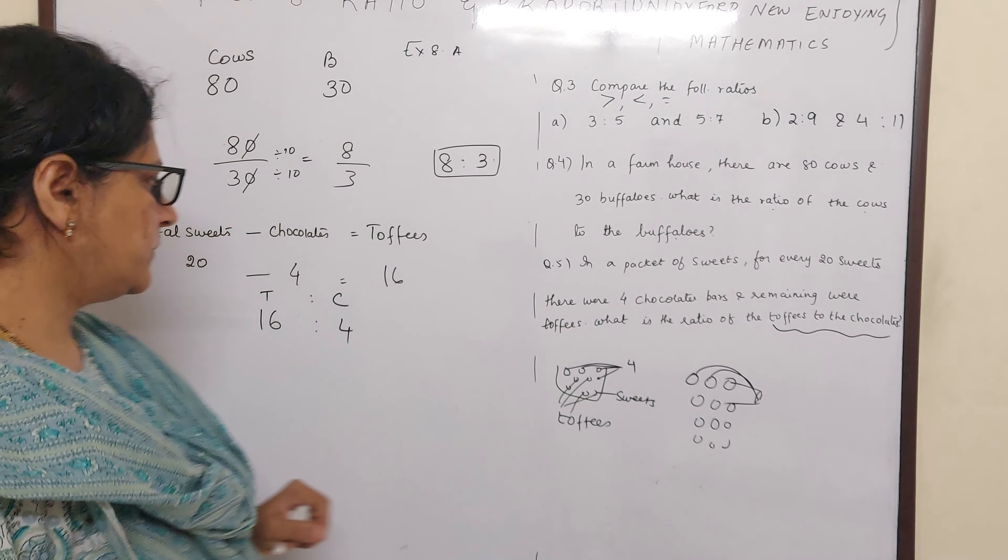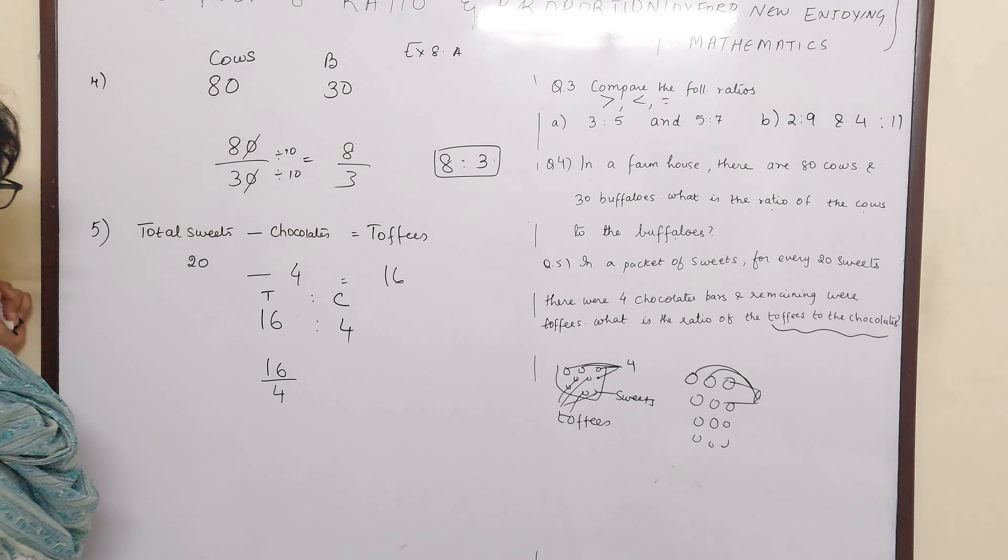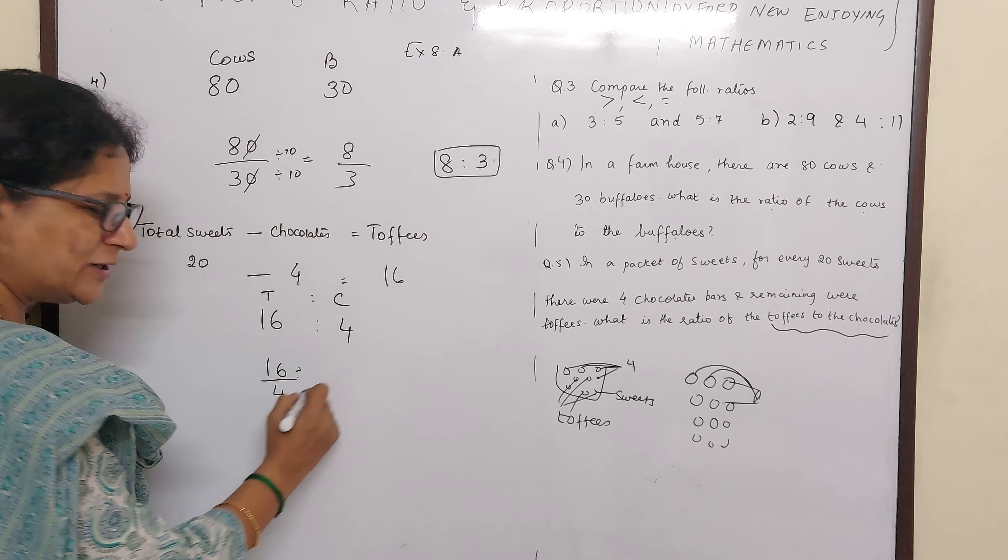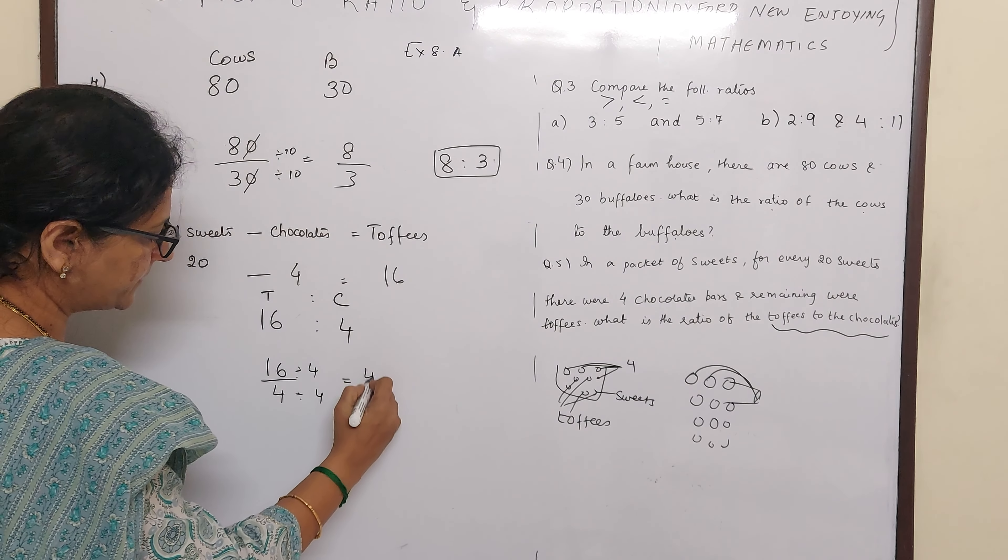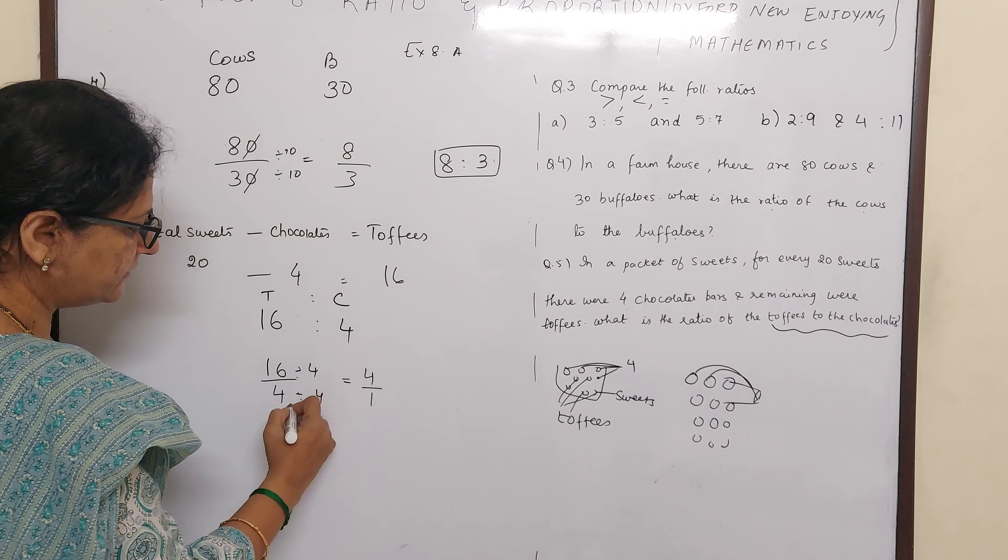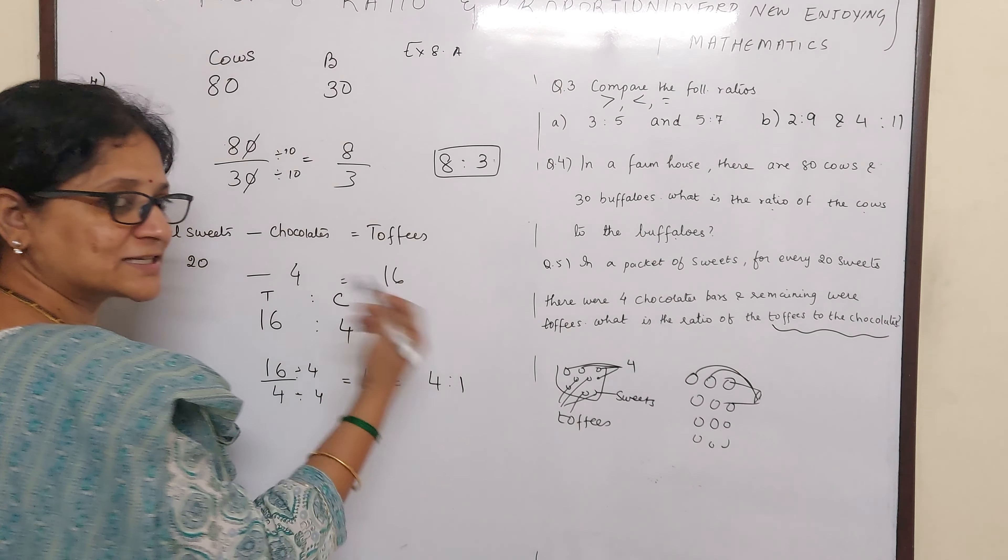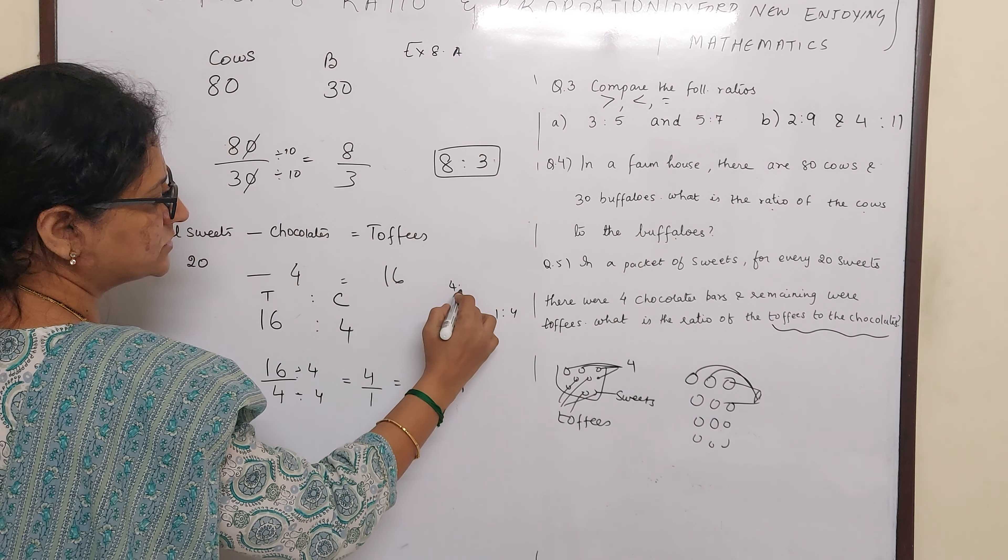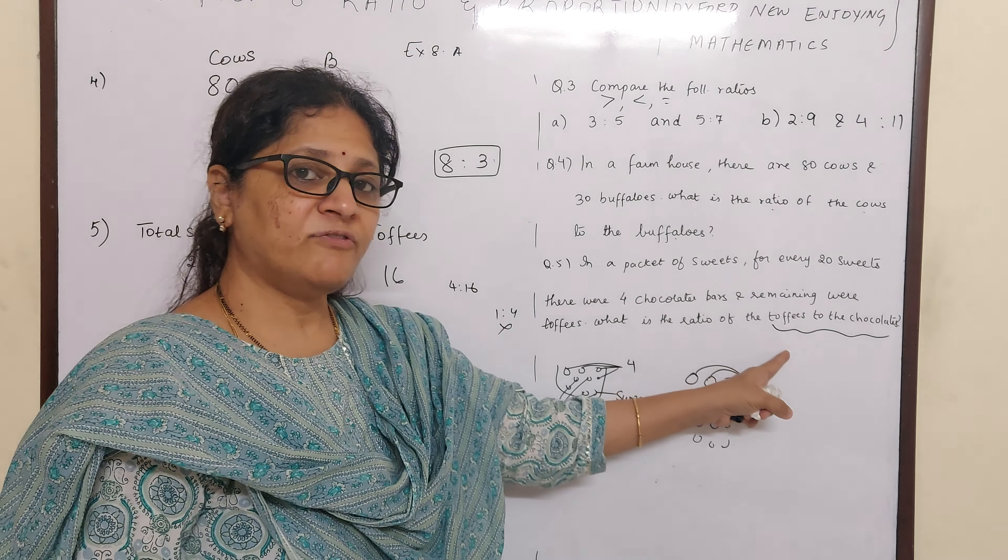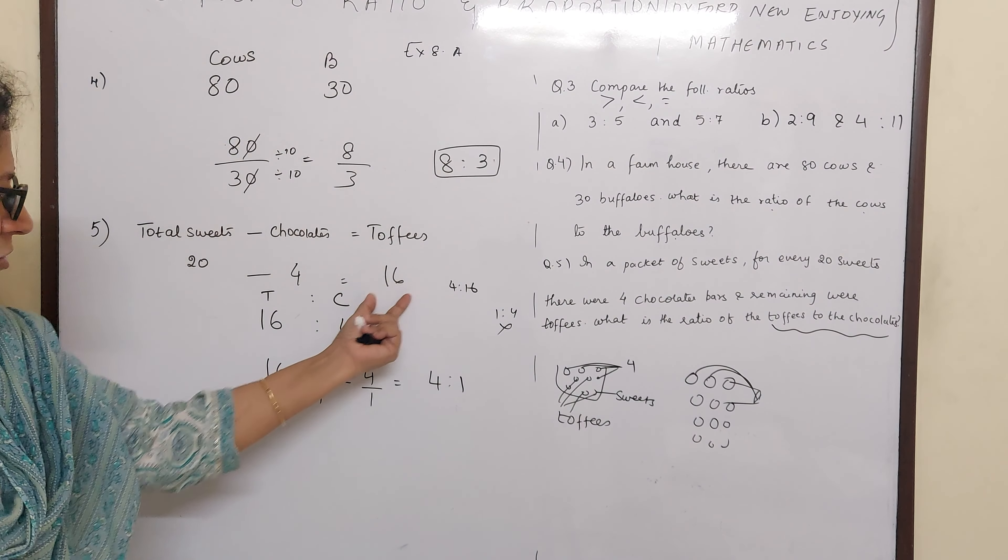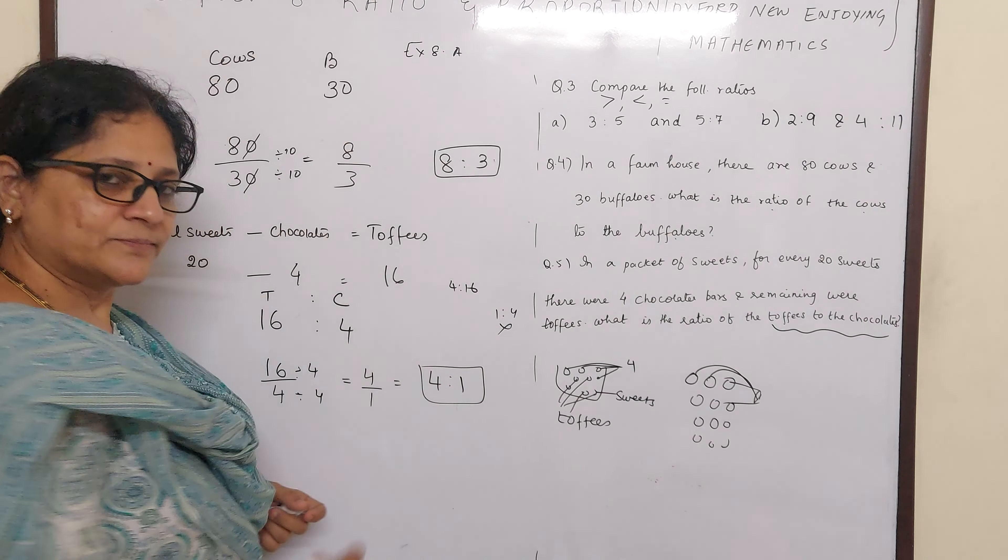And now reading the question is very important children. Now 16 is to 4. How will you write? 16 in the numerator. 4 in the denominator. Now what is the highest factor which will go in both? You can divide it by 2 also. But I am dividing it by 4 and finding the answer in one step. 4 fours are 16. 4 divided by 4 is 1. So your ratio is 4 is to 1. If you write first 4 and then 16, then your answer would have been 1 by 4. If you have done 4 is to 16, then chocolate is to toffees. So your answer will be wrong. So that is why ratio of toffees to chocolate. First toffees, then chocolate. And then their ratio. So this is your answer.